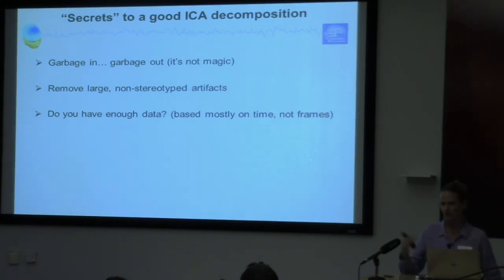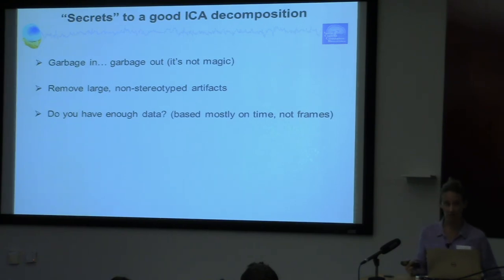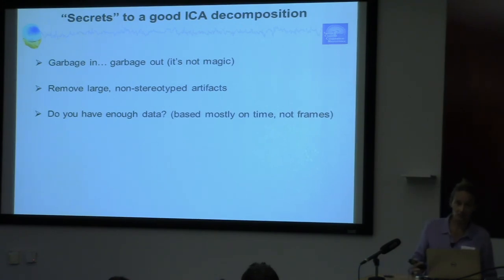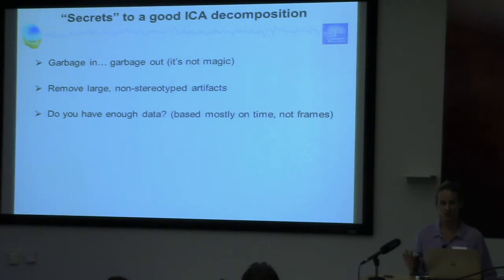If you've done everything else and you're still not getting good information, you might want to look at how many channels versus time points you have. The more channels you have, the more time points you need. At SCCN, they have 256 channels, and to decompose that you need close to an hour of data to get really good components. The fewer channels you have, the less data you need. But when you get very few channels, it's questionable whether you're getting real independent data.